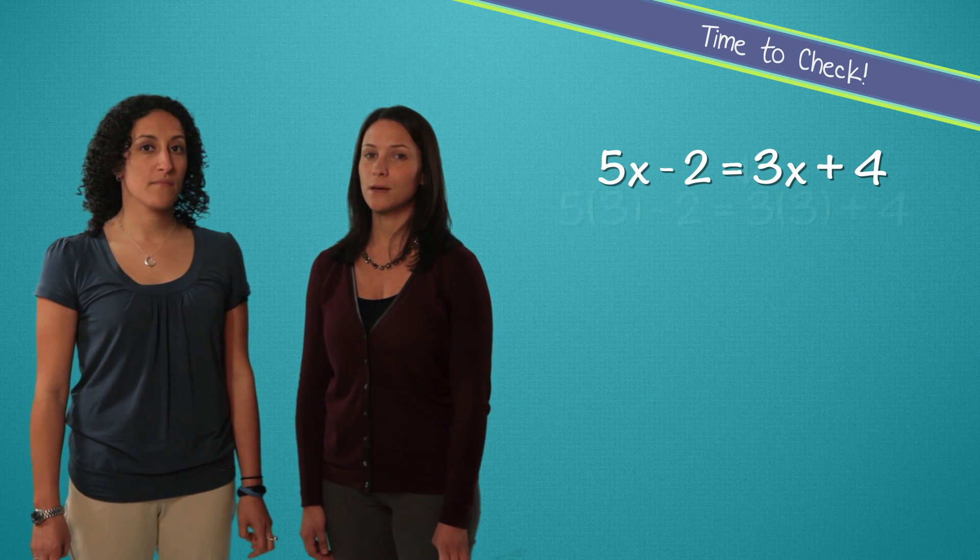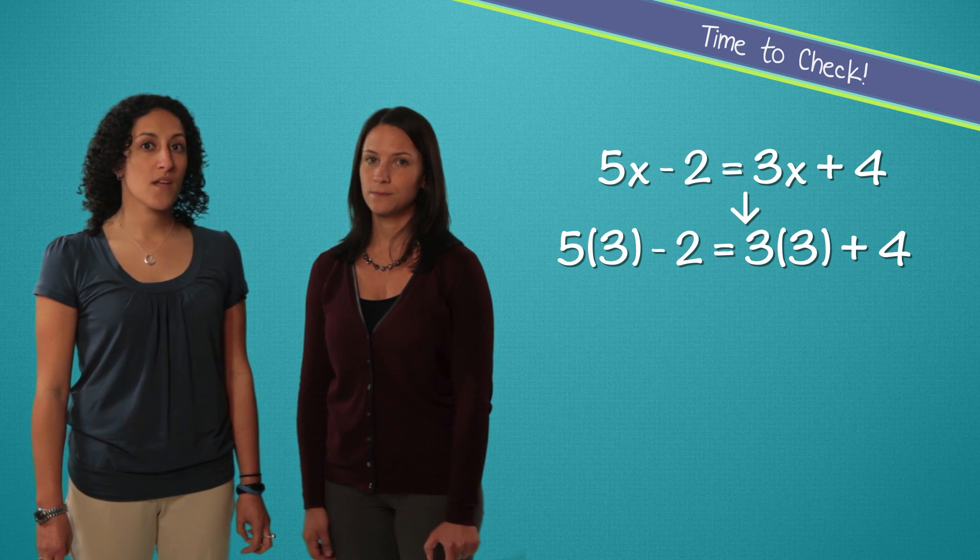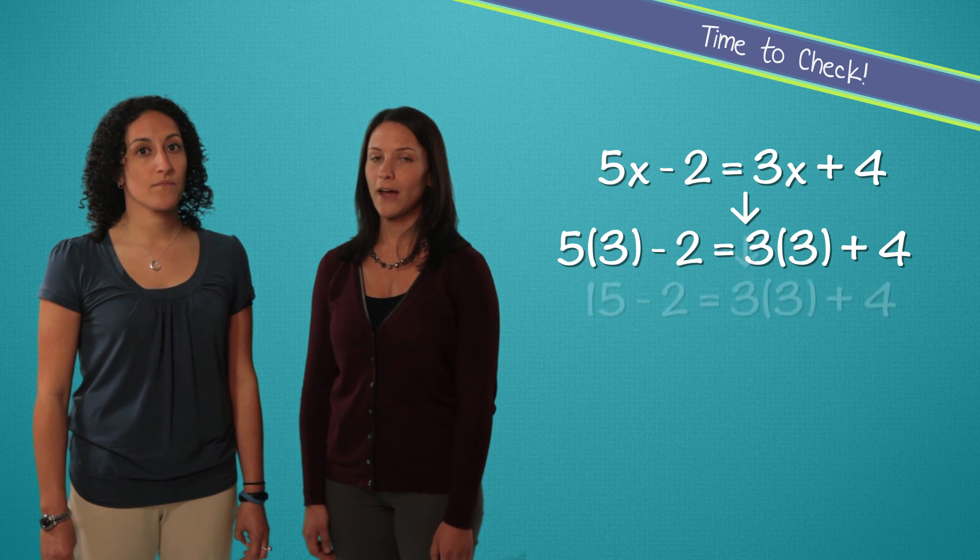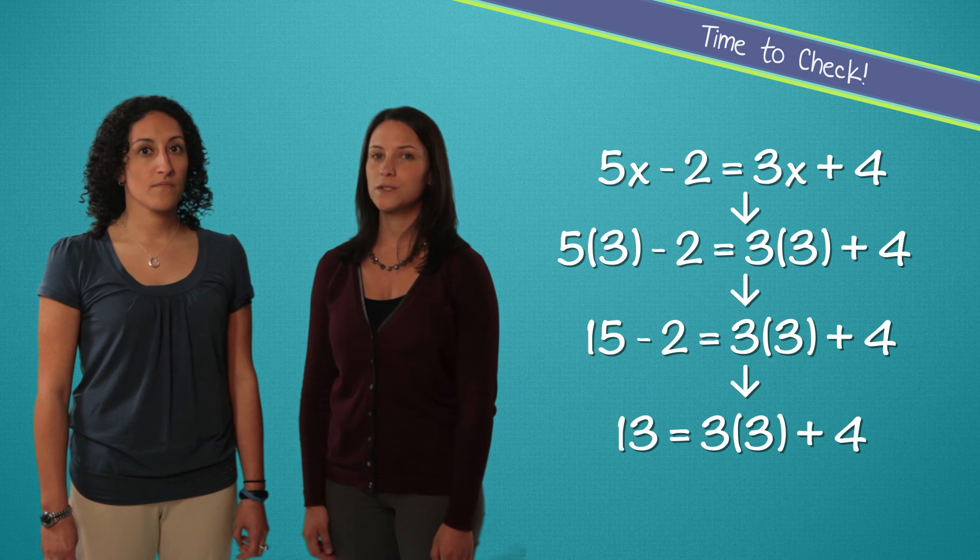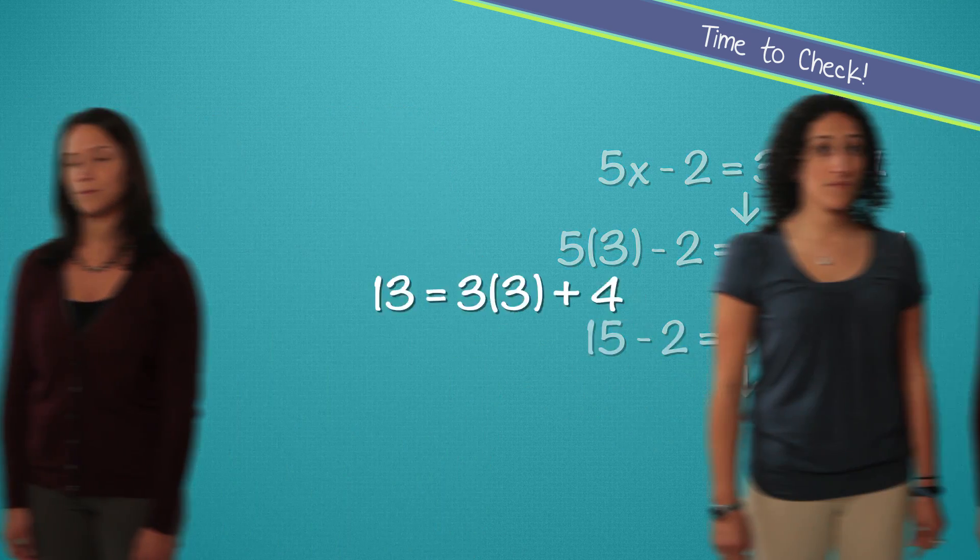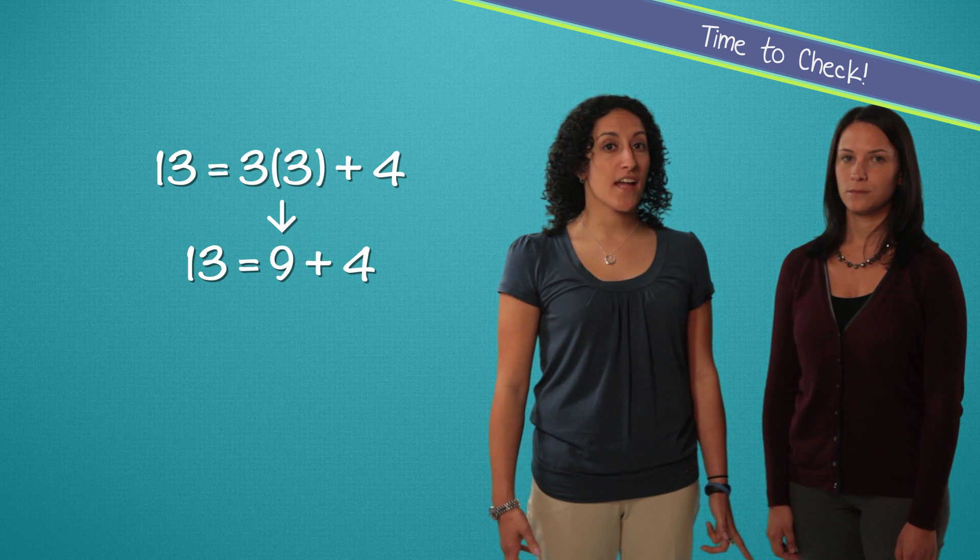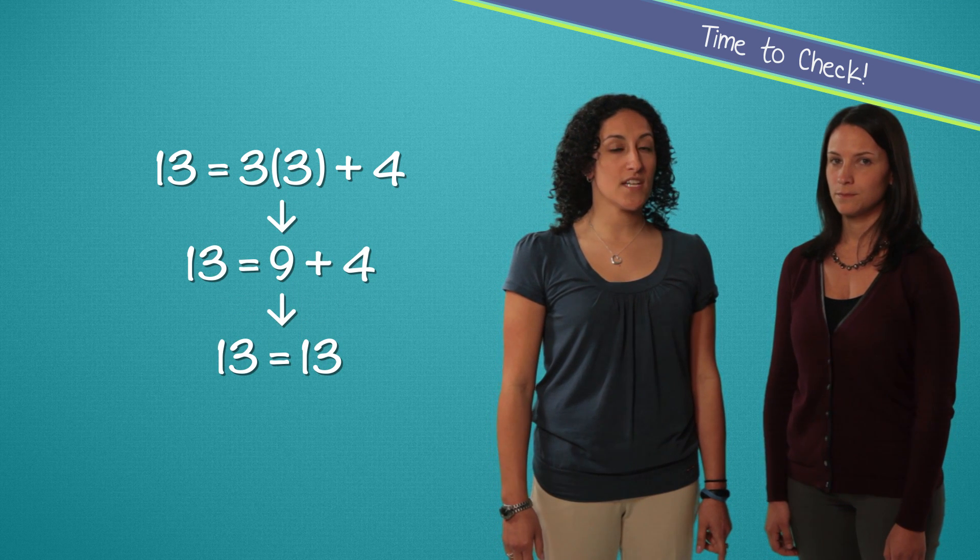Now let's check that by substituting in 3 for x. Back to the top. Remember to use PEMDAS. Multiplication comes first. 5 times 3 is 15, and 15 minus 2 is 13. And on the other side, we multiply first. 3 times 3 is 9, and 9 plus 4 equals 13. It checks out.